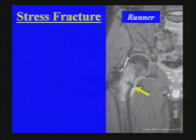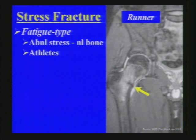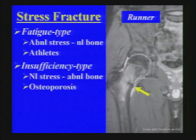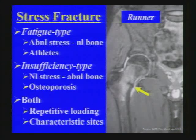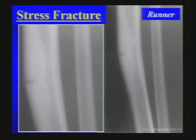Next unknown — a stress fracture, certainly common in clinical practice. Here we see a runner with a fatigue-type stress fracture, in which abnormal stress was exerted on normal bone — classically seen in athletes. The insufficiency type occurs when normal stress acts on abnormally weakened bone, for example in a patient with osteoporosis. In both cases, repetitive loading causes failure at characteristic sites. A classic site for the fatigue type in a runner is the tibial mid-shaft stress fracture.